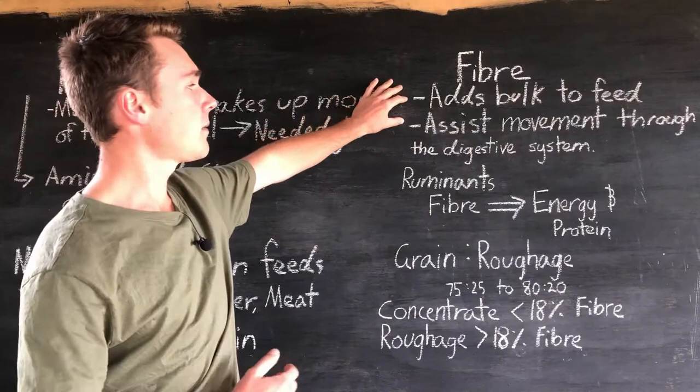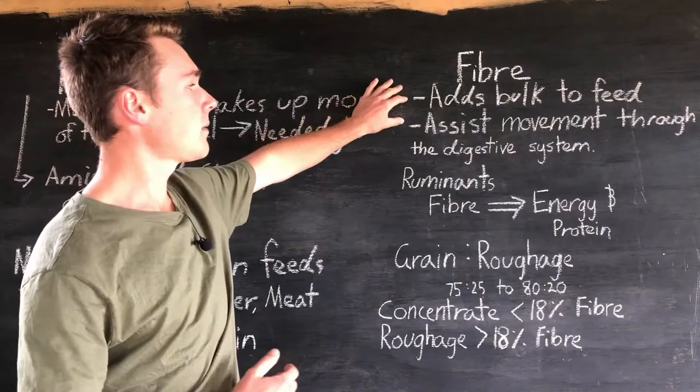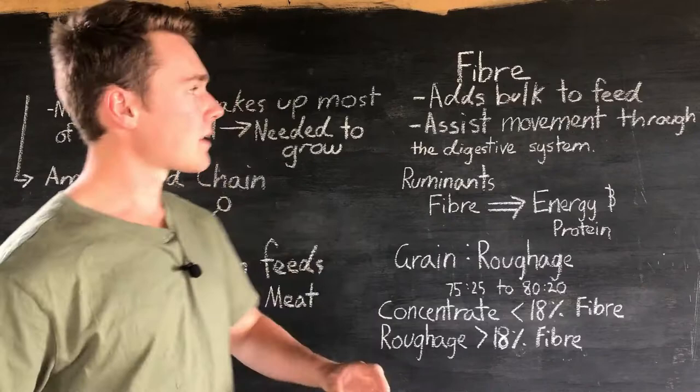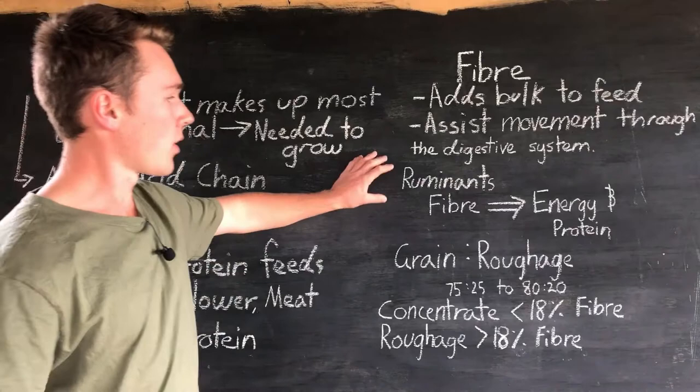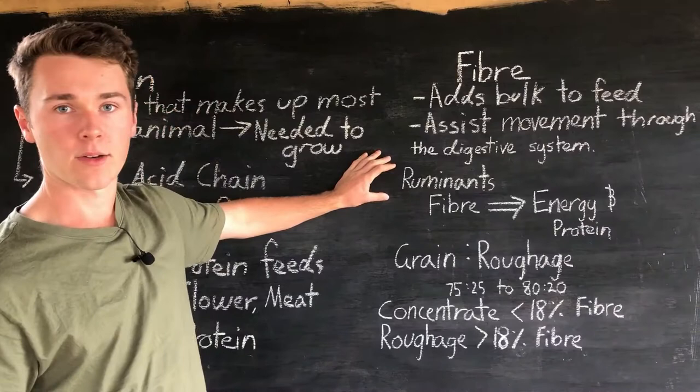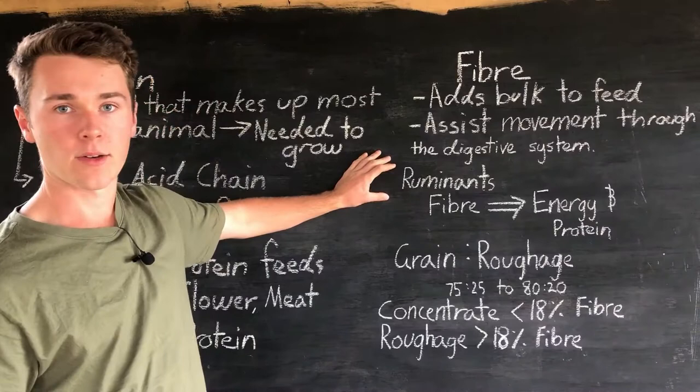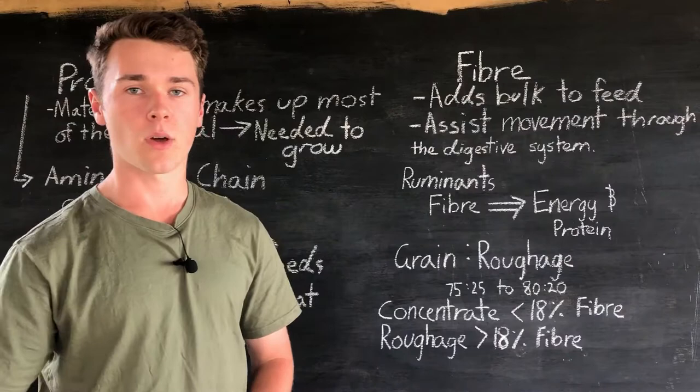Next is fiber. Fiber makes up the bulk of the feed and assists with movement through the digestive system — it's essential to have a lot of fiber in the diet to keep everything running smoothly. As mentioned, ruminant animals can turn fiber into energy and protein because of the microbes in their gut, whereas monogastrics can't. So ruminants can tolerate a higher amount of fiber in the diet.